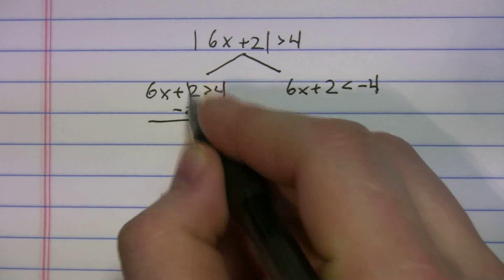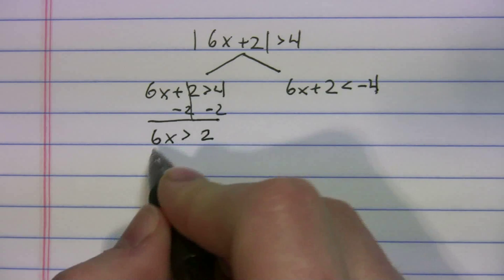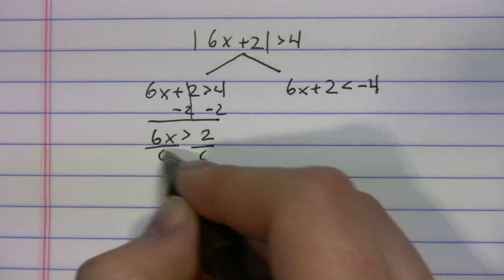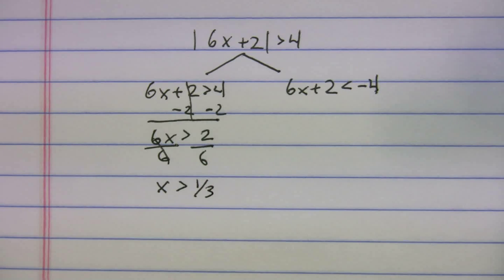Minus 2, minus 2. 6x is greater than 2. Divide by 6. Then we get x is greater than, and I'll just put 1/3.